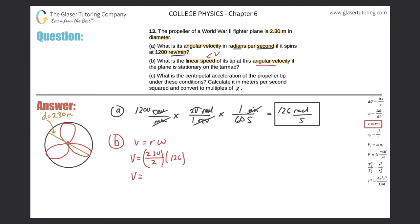We just plug it into the calculator. So 2.3 divided by 2 times 126 comes out to be 145 meters per second. That is now the tangential velocity.